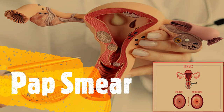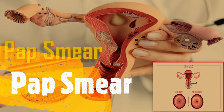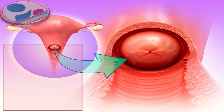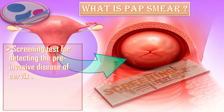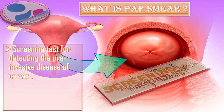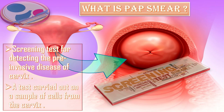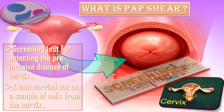Bismillahirrahmanirrahim. In this short video we will talk about pap smear. What is pap smear? It is a screening test for detecting the pre-invasive diseases of the cervix. In other words, pap smear is a test carried out on a sample of cells from the cervix to check for abnormalities that may be indicative of cervical cancer.